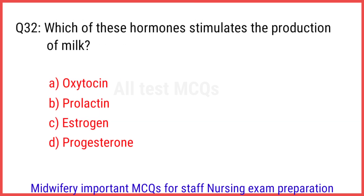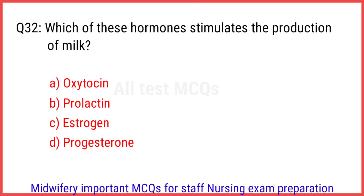Q32. Which of these hormones stimulates the production of milk? The right answer is option B/D: Prolactin.